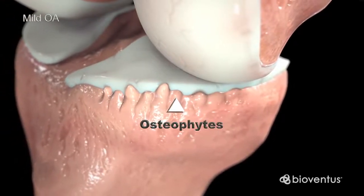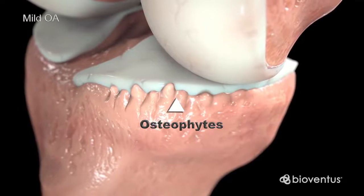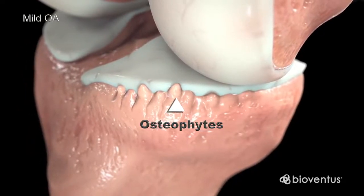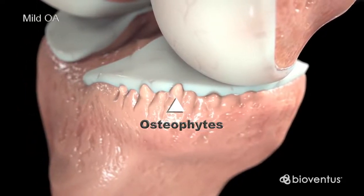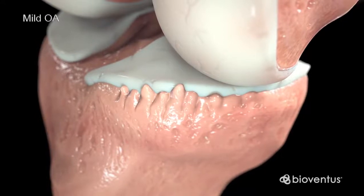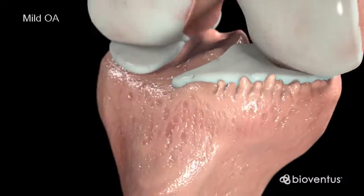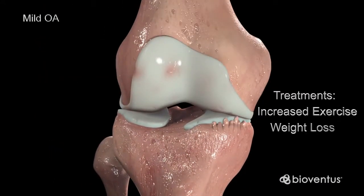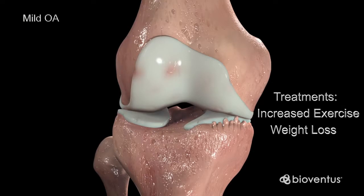These small, smooth, dense growths of bone are part of the body's natural response to the loss of cartilage. Progression of the disease may be slowed at this stage by increased exercise and weight loss.